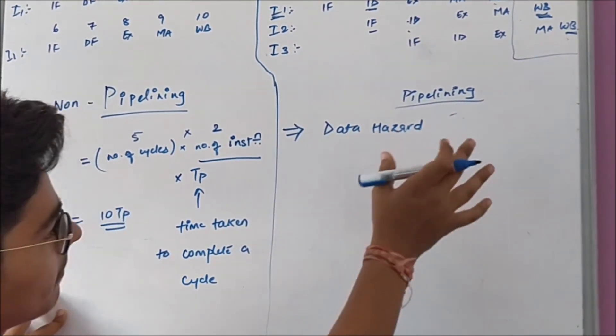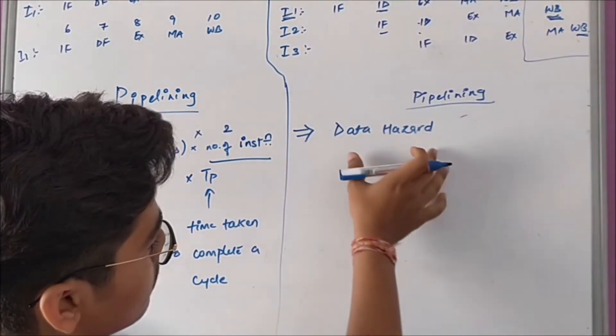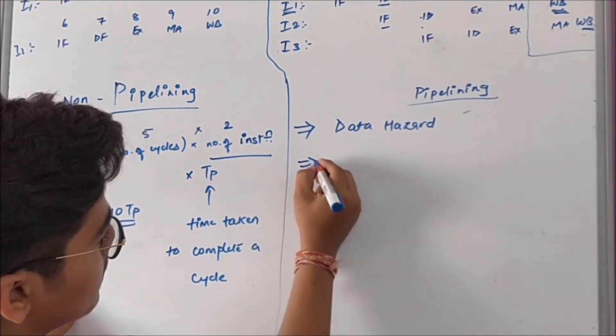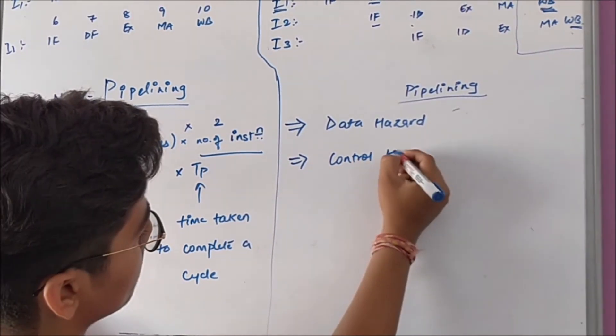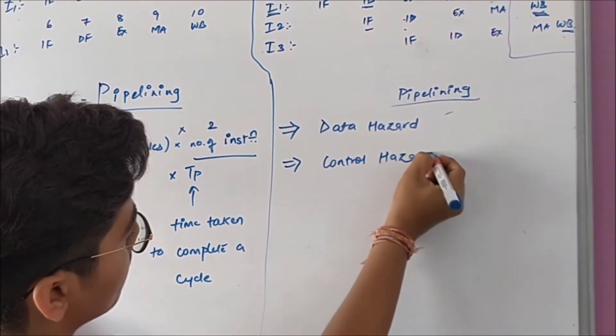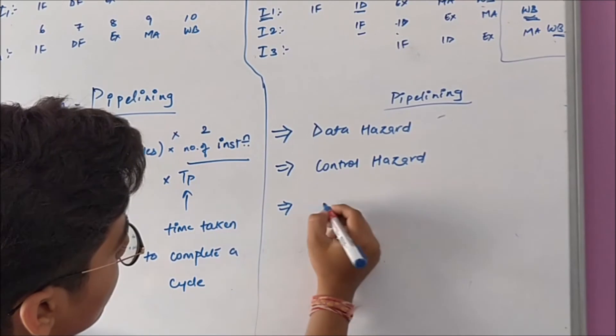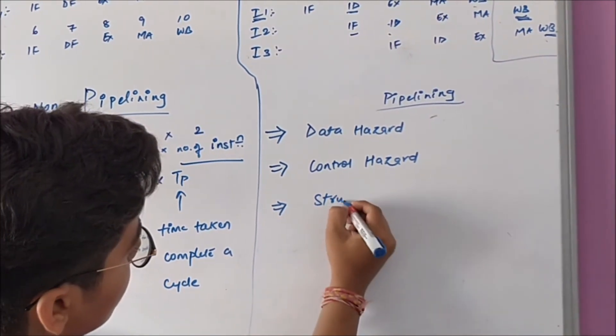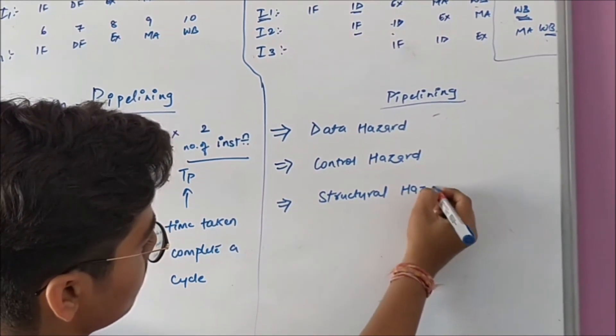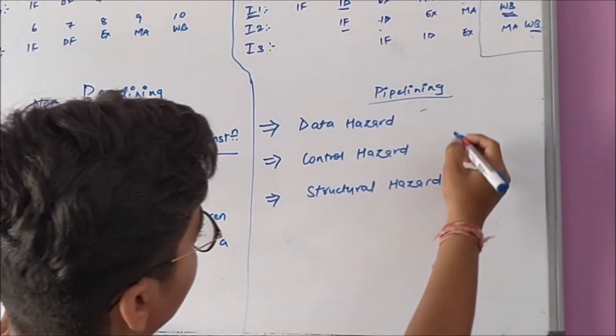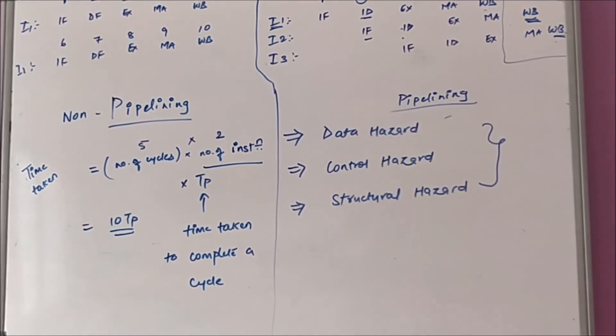Second is control hazard, and third is structure hazard. The details of all these hazards will be seen in the next lecture.